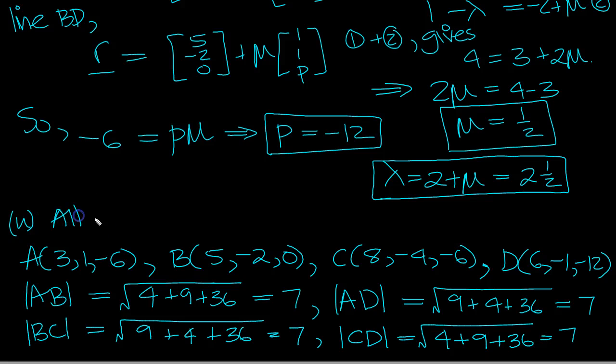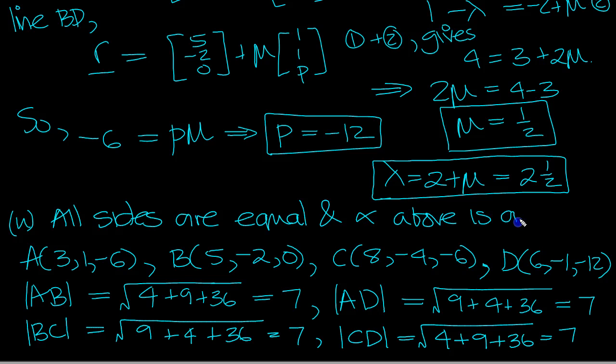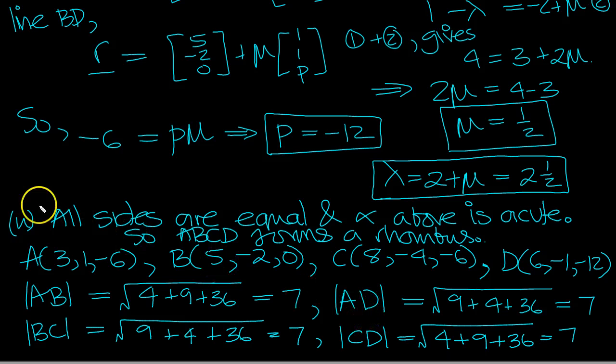All sides are equal, and alpha above is acute. So a rhombus is formed. So ABCD forms a rhombus. So there's the comment for part 2 in B.